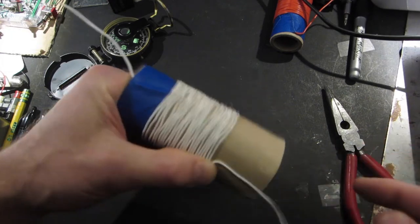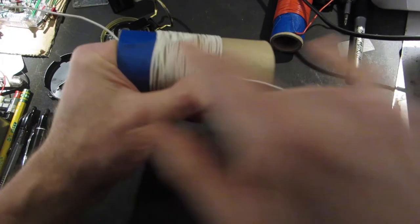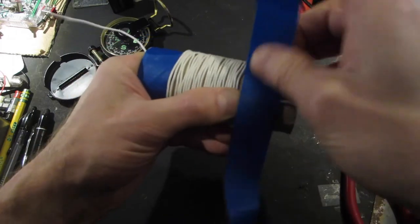Well I managed to use up my whole spool of bell wire, so I'm pretty happy about that. When you've wound at least half of the length of the tube, tape it off.